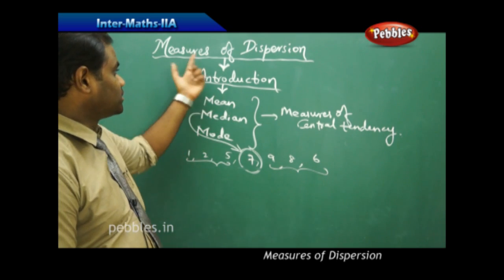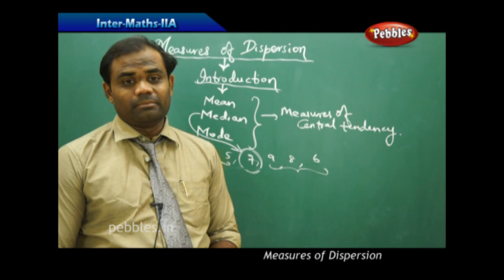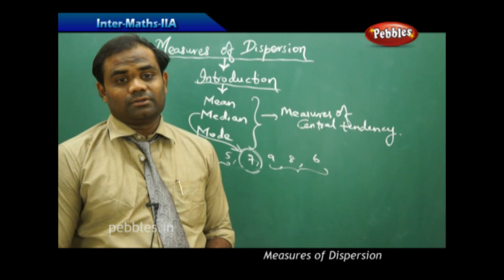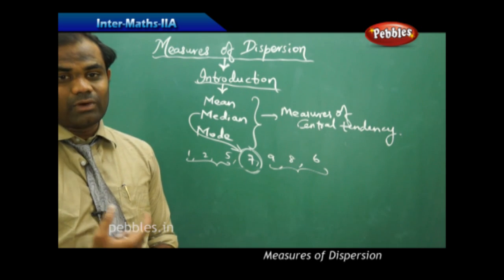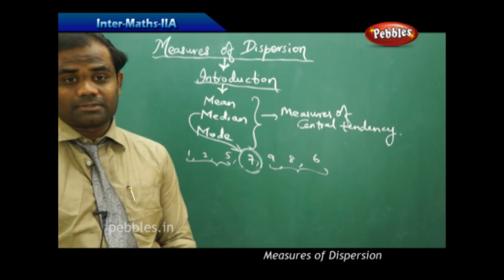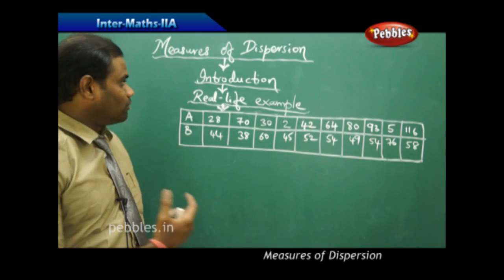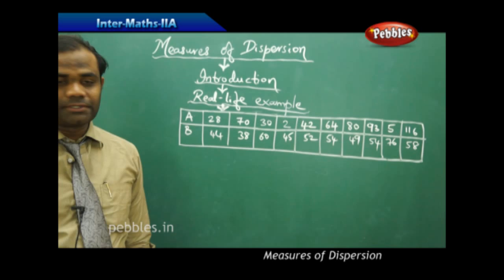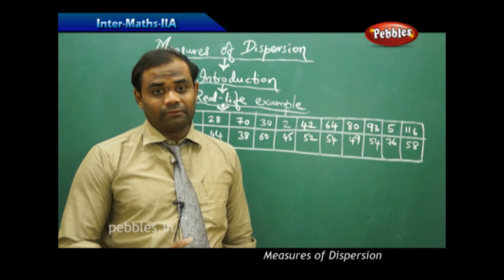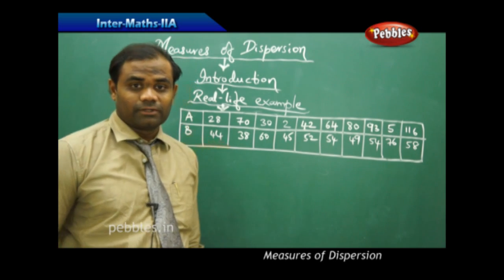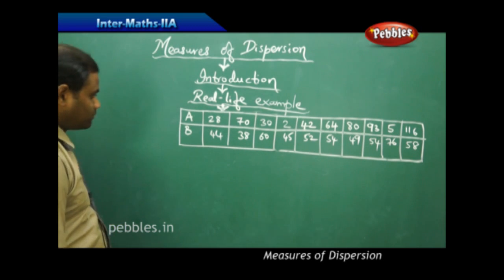Similarly, the measure of dispersion also has three basic tools in statistics through which we measure the dispersion or variation value. Let's see through a real-life example why we need to find the measure of dispersion, and what the need is for considering it in statistical surveys.